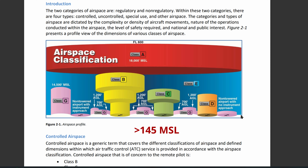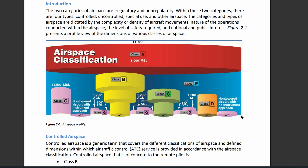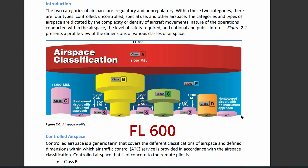To summarize: if Class E airspace is depicted on a sectional chart, it's based below 14,500 feet MSL. If it's not depicted, it starts at 14,500 feet and goes up from there. The base usually starts at surface level, 700 feet AGL, or 1,200 feet AGL. Some Class E airspace depicts MSL instead of AGL, so watch out for that.